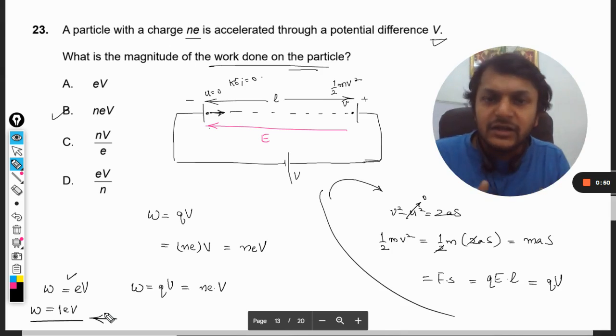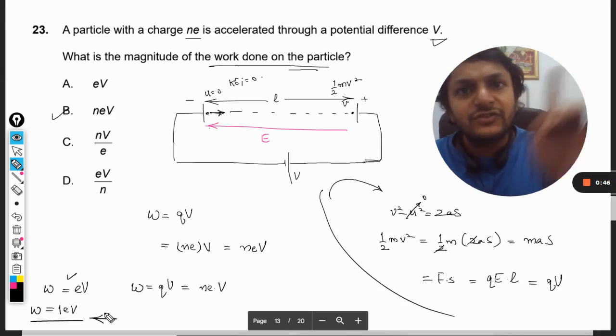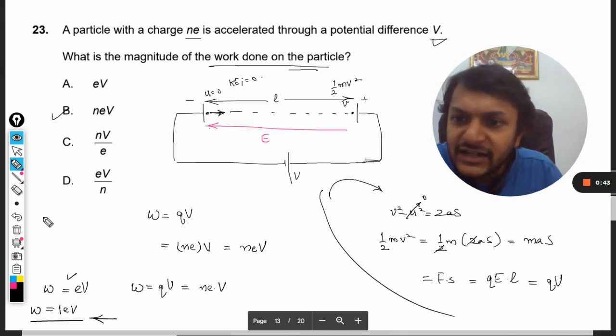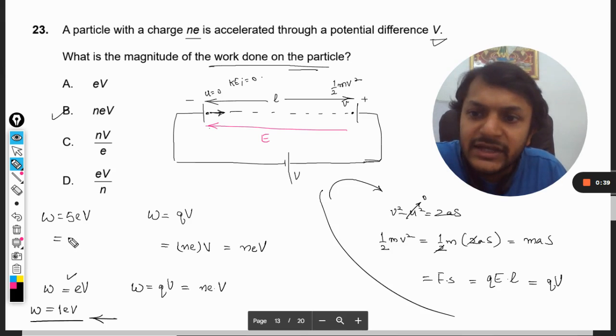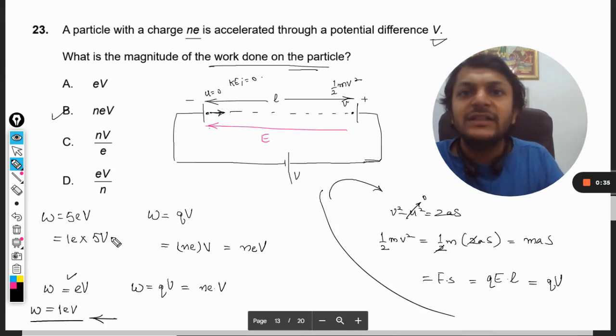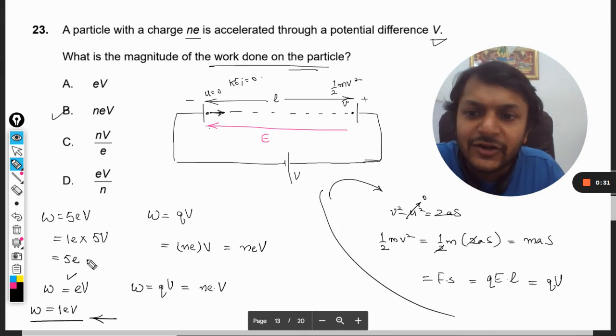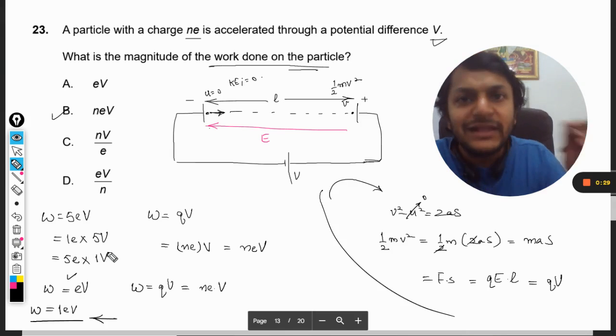If I say the work done is five eV, it means one electron is accelerated by the potential difference of five volts, or five electrons have been accelerated by the potential difference of one volt.